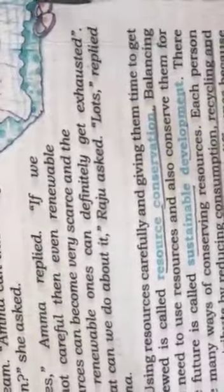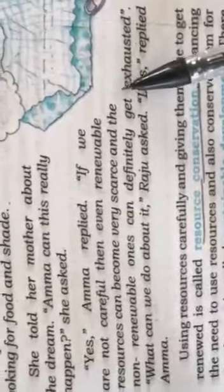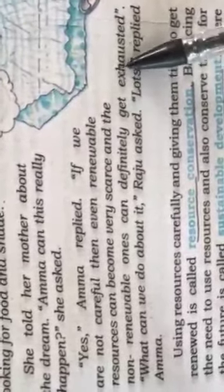See, here is one child named Mona. When she was sleeping, she dreamed that all the resources - water, trees, and food - were gone. People were not getting food to eat or water to drink. She told this dream to her mother, and her mother replied that there would be no resources.